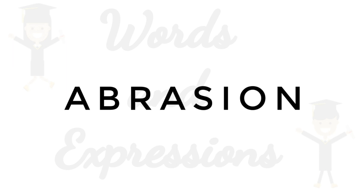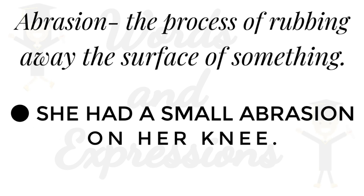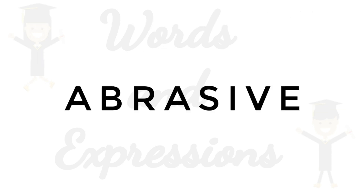Number two: 'abrasion.' This word comes from the verb 'abrase,' meaning to rub off something. The word 'abrasion' means the process of rubbing away the surface of something. For example: 'There seems to have been some abrasion of the surface.' We can also use it as: 'She had a small abrasion on her knee.'